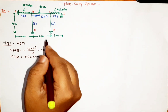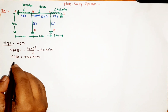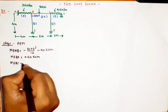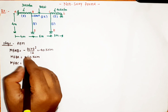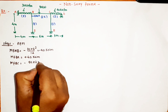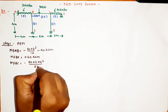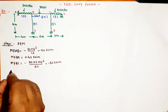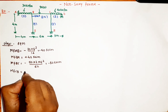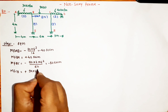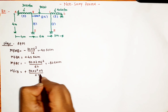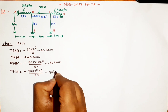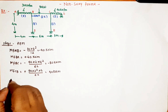Next is BC, which has an eccentric point load. The formula is -wab²/L². So M_f_BC = -90×2×4²/6² = -80 kNm. For CB, M_f_CB = +wab²/L², which is +90×2×4/6² giving... using +wa²b/L², the answer is +40 kNm.